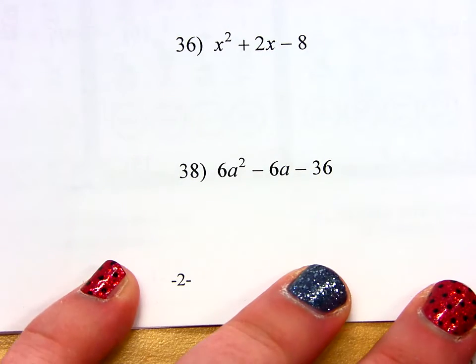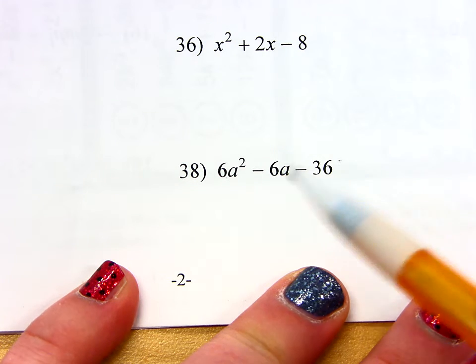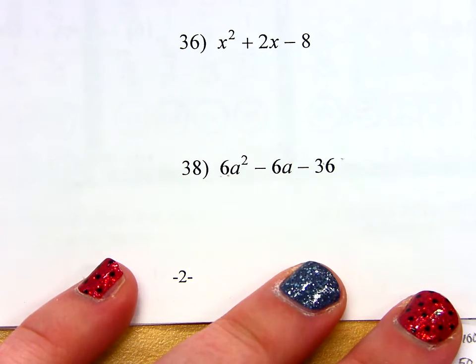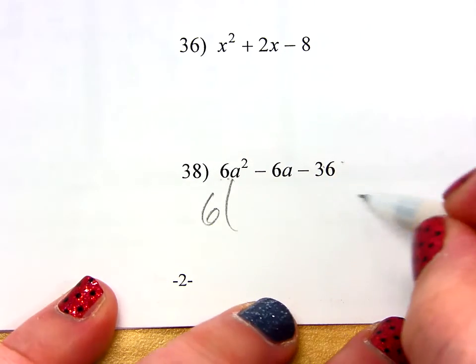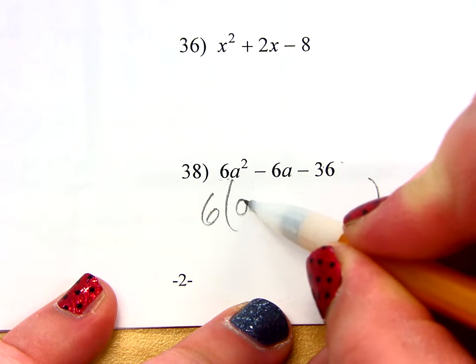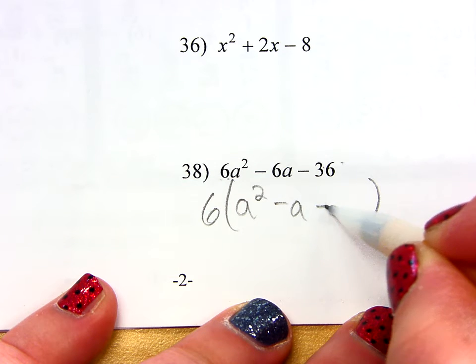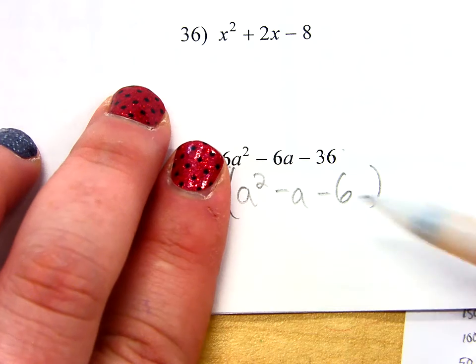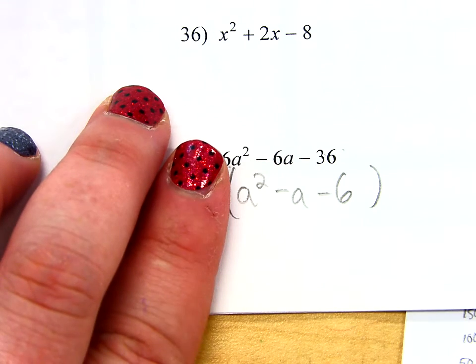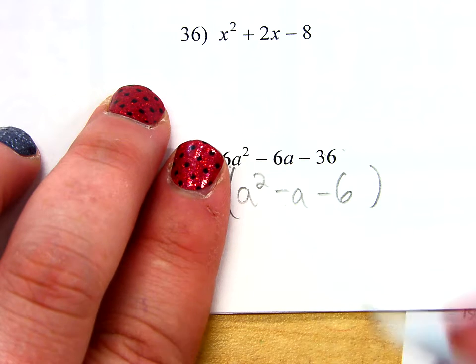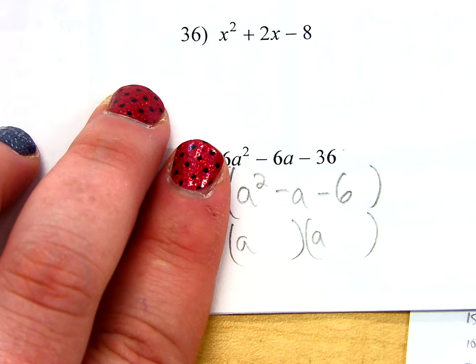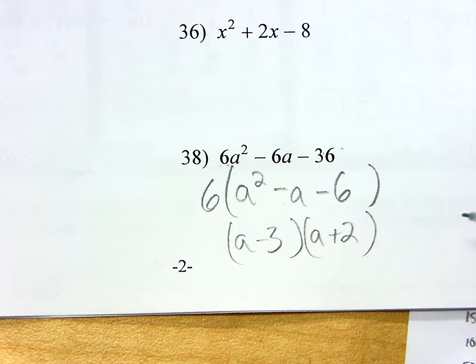So, if you look at 38, this one is a trinomial, but we only know how to factor a trinomial when a is 1. A is 6 here. However, can't I factor out a 6 from the beginning? Yeah, let's take out a 6. And then what would be left behind? A squared minus A minus 6. That's it. Now, ladies and gentlemen, if I pretended that that 6 wasn't even there, now I could say, okay, factor that just like we have been. So, find factors of negative 6 that add to be negative 1. What are they? Negative 3 and a positive 2. So, what happens with that 6 that came out from the beginning? It just comes down.